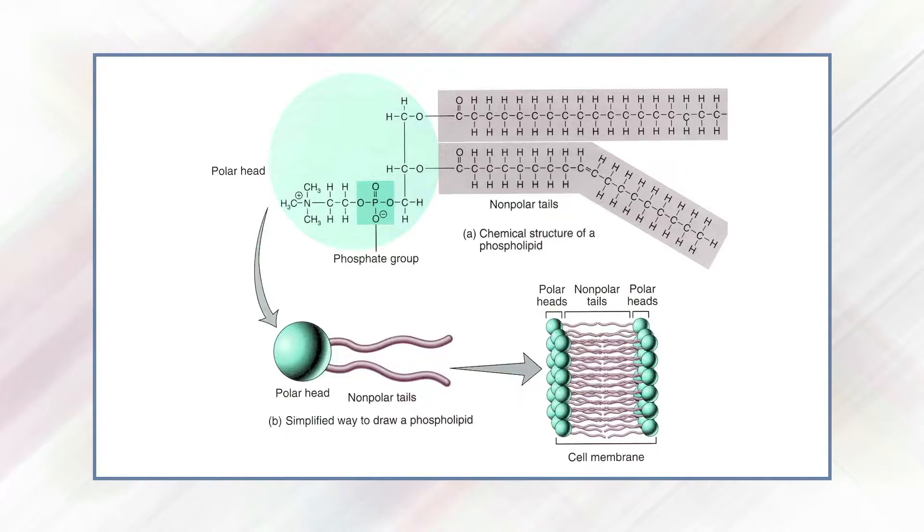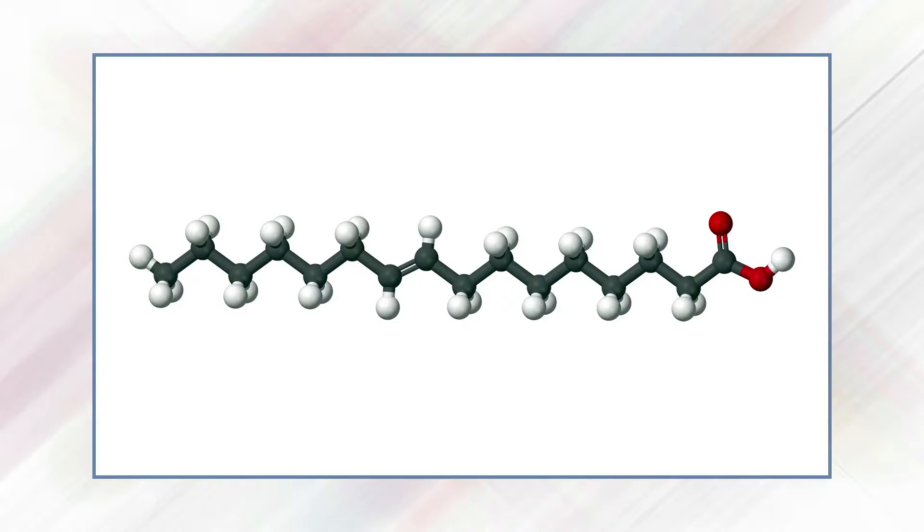The nature of the phospholipids themselves affects fluidity. In saturated form, fatty acids in phospholipid tails are saturated with hydrogen atoms — no double bonds between adjacent carbon atoms. Unsaturated fatty acids contain some double bonds, resulting in a bend of approximately 30 degrees in the carbon chain. If unsaturated fatty acids are compressed, the kinks in their tails elbow adjacent phospholipid molecules away, maintaining space between molecules and thus contributing to membrane fluidity.